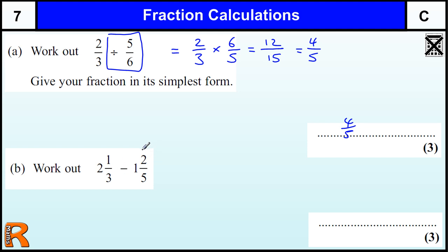With subtraction, especially if 2 fifths is bigger than 1 third, which it is slightly, it's going to be a little bit messy if you do it that way. So I would say change this into a top heavy fraction. So how many thirds are there in 2? Well, there's 3 thirds in 1, so there's 6 in 2, plus this 1 makes 7. So 2 and 1 third is the same as 7 thirds. And 1 and 2 fifths, well there's 5 fifths in 1, plus the 2 on the top is 7 fifths.